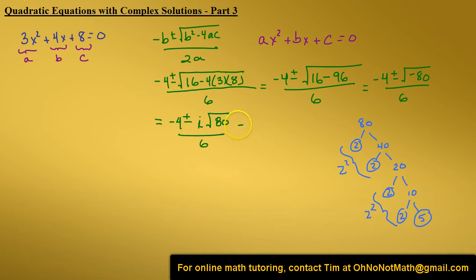Let's write this as negative 4 plus or minus I times the square root of 2 squared times 2 squared times 5 all over 6. We can bring this 2 out from the radical and this 2, that would be 2 times 2 is 4. So we would have 4i times the square root of 5, we're left with just 5 under the radical, all over 6.